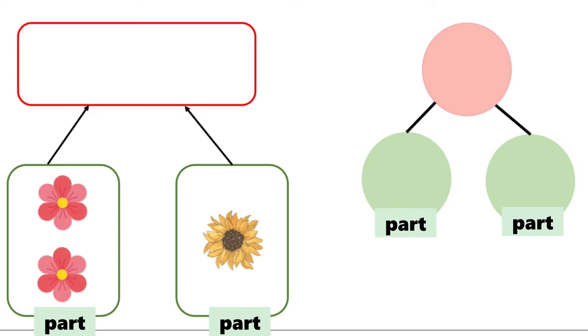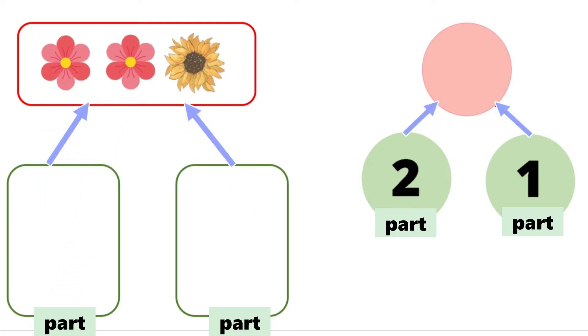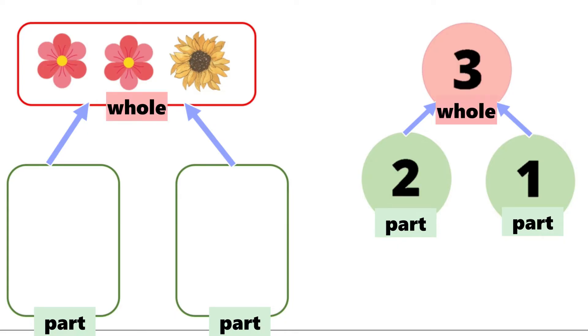Two flowers are pink. One flower is yellow. When we put them together, we have one, two, three flowers all together. So we write three. Two and one makes three. Part and part makes a whole.